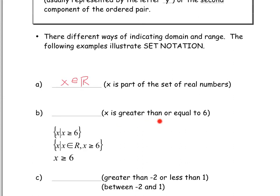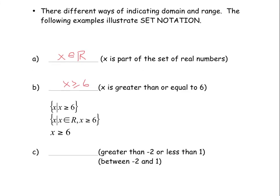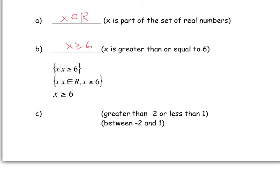Now, how would we write X is greater than or equal to 6? There are a few different ways to represent it, but the main idea is X is greater than or equal to 6 — notice the equal sign. You might see different representations in a book, but this is the heart and core. And for the last one: greater than negative 2 or less than 1. So X is greater than negative 2 but less than 1 — notice there are no equal signs because we're not including negative 2 and 1.